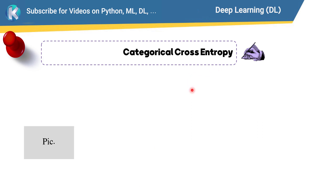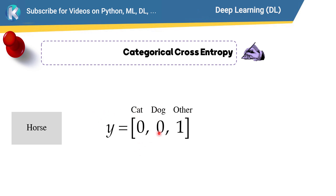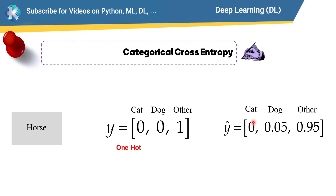Now let's talk about categorical cross entropy. Suppose we have a picture and we want to detect whether it is a cat, a dog, or another animal. For a picture of a horse, the actual label is 'other animals.' The actual label is represented in one-hot vector format — a vector with a 1 corresponding to the true class and 0s elsewhere. Suppose our model predicts probabilities for each class: a probability for cat, a probability for dog, and a probability for other animals.